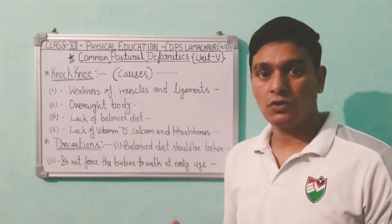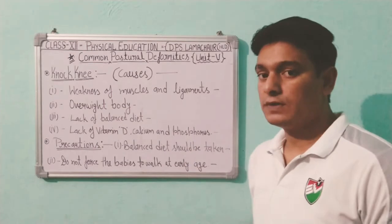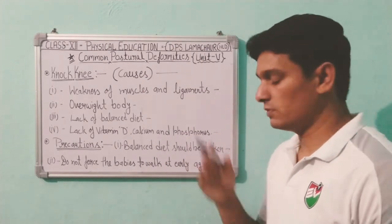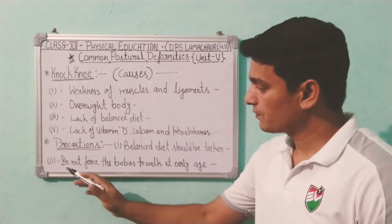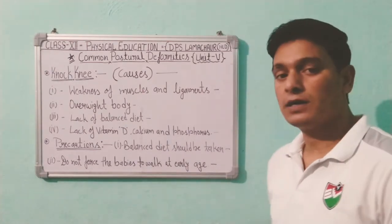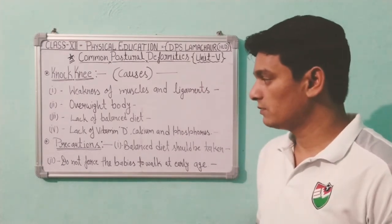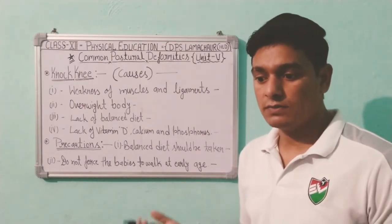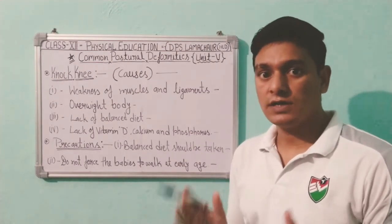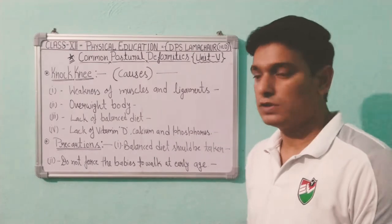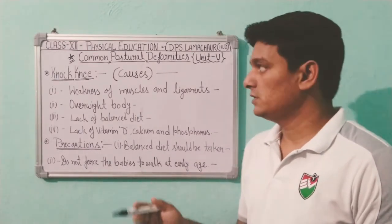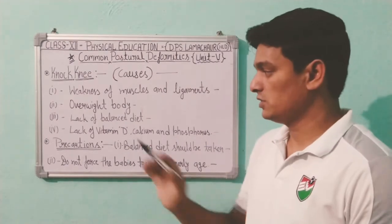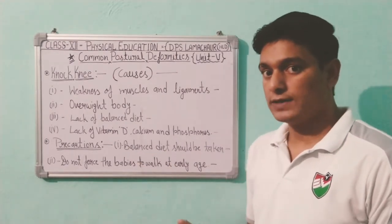The precautions for knock knee are: first, a balanced diet should be taken — this is very important for overall development so the body develops properly. Second, do not force babies to walk at an early stage. If you force babies to walk at an early age, their body weight goes into their legs and the bones, being very soft and not properly developed, can develop knock knee deformity.